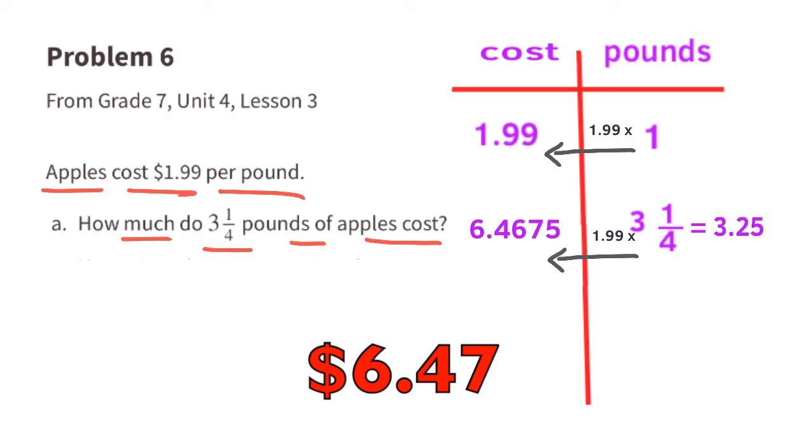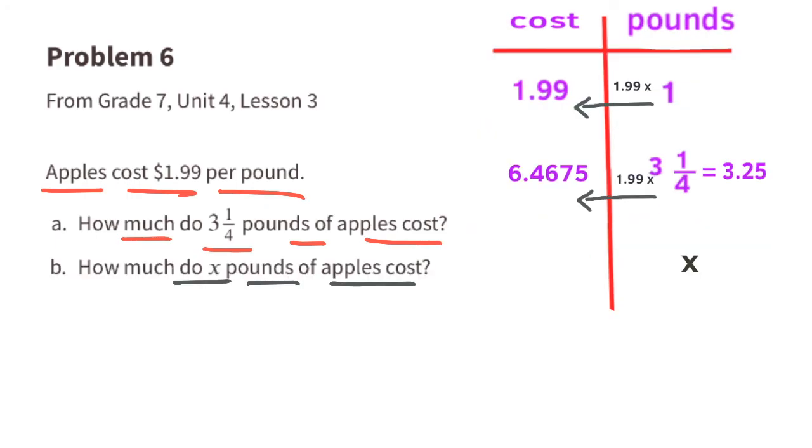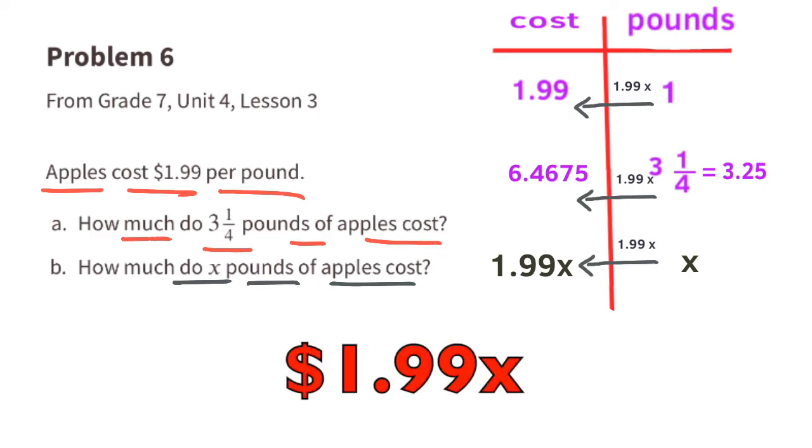So it would cost about $6.47 to buy 3 and a quarter pounds of apples at $1.99 per pound. B. How much do x pounds of apples cost? Well, that would be $1.99 times x, which is $1.99x.